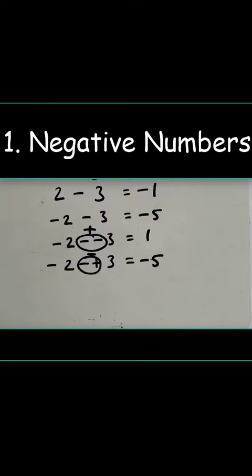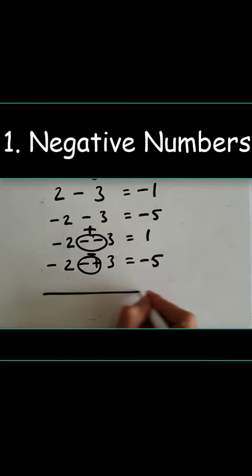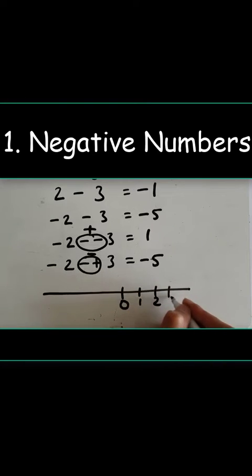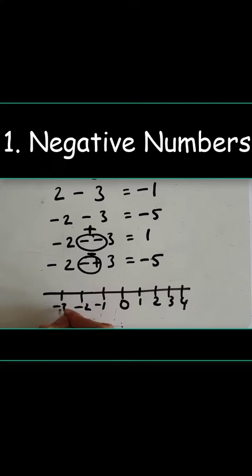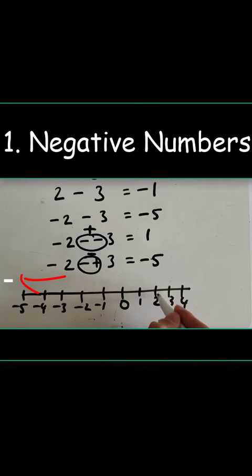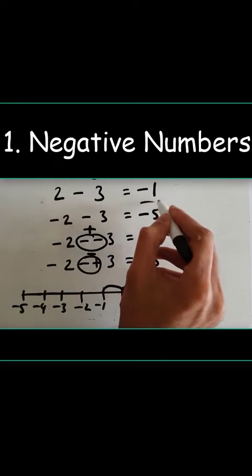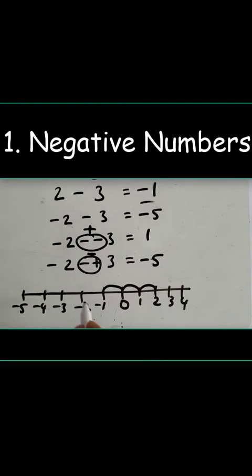If you're getting mixed up with the signs in your answers, always try to use a number line. We have a number line here — it doesn't take long, just a few seconds to draw. For 2 minus 3: start at positive 2, take three steps to the left — one, two, three — and the answer is minus one. That's how we get minus one.